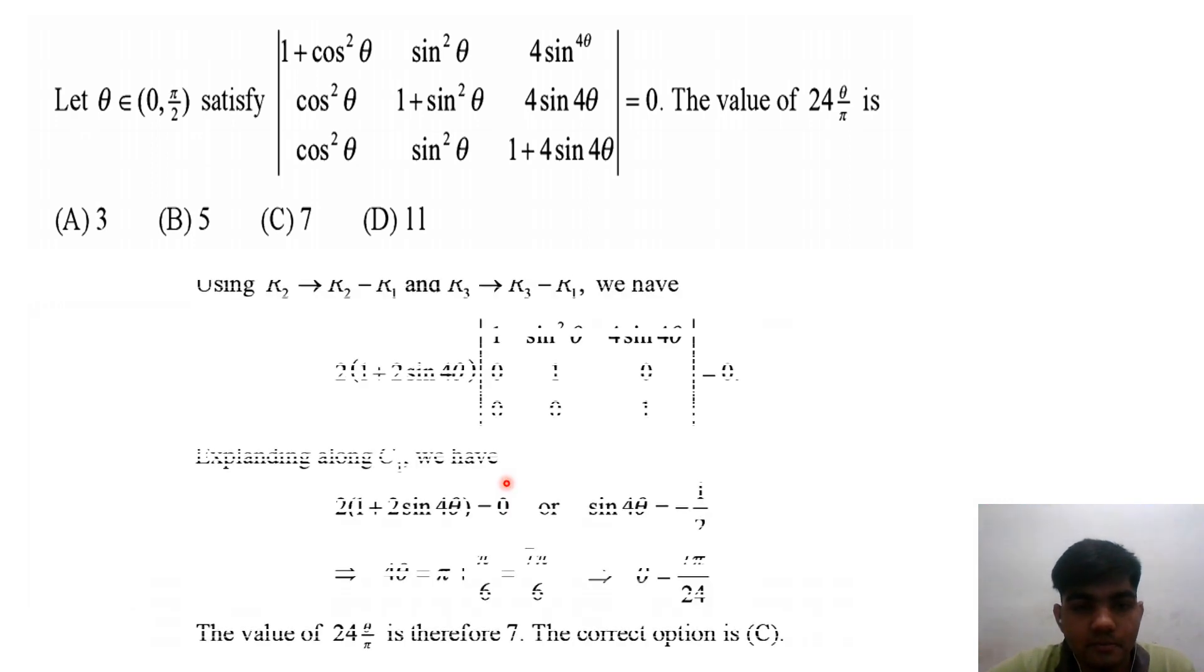Now we apply row operation R2 minus R1. In the first column we get 0. In the second column, we obtain 1 + sin⁴θ.